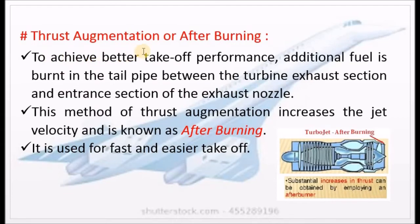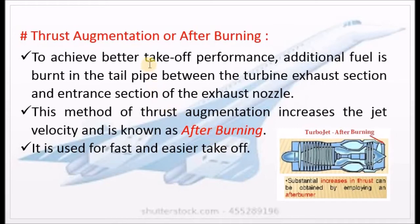Thrust augmentation or after burning: to achieve better take-off performance, additional fuel is burnt in the tail pipe between the turbine exhaust section and the entrance section of the exhaust nozzle. This method of thrust augmentation increases the jet velocity and is known as after burning. It is used for fast and easier take-off.